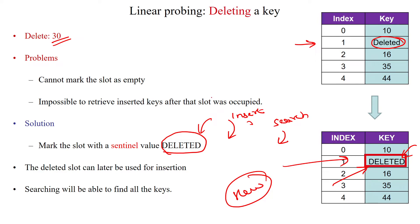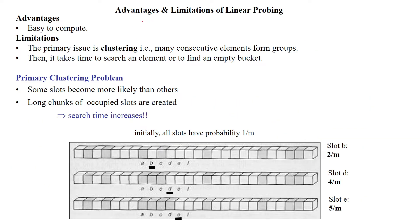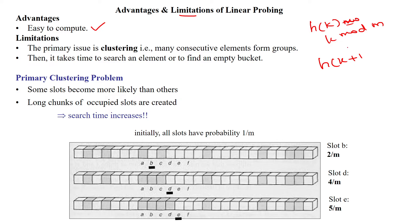After deletion, we should mark that position as the sentinel value 'deleted'. One of the advantages of linear probing is that it is very easy to compute the probe sequence. We use H(K) = K mod M. If the key is not found, we apply the probe sequence starting from 1, then mod M, and keep on applying it, which is easy to compute.